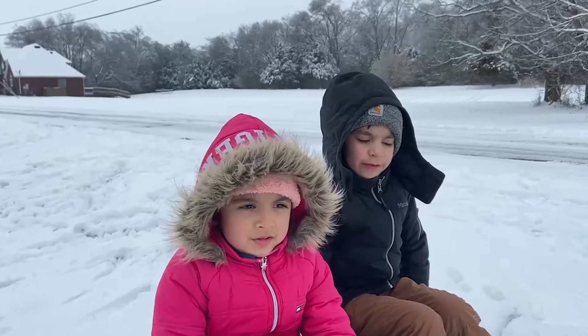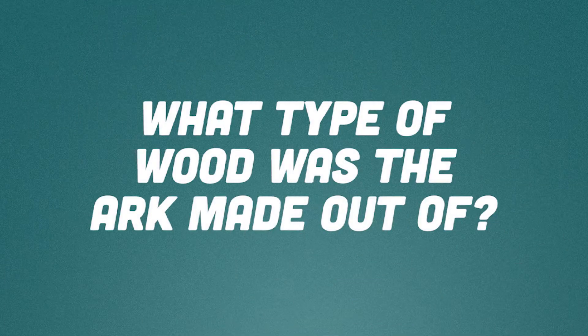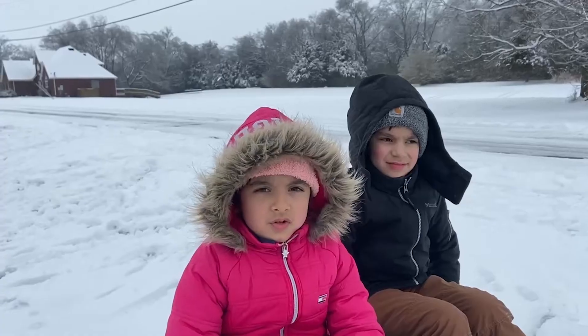How many books are in the Old Testament? Guesses included 60, 12, 14, 43, 36, and 39 — the answer is 39! What was Noah's ark made out of? Guesses were 'a tree' and 'wood,' but the ark was made out of gopher wood.